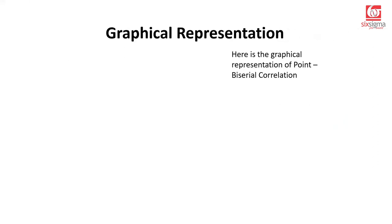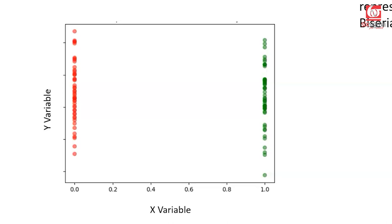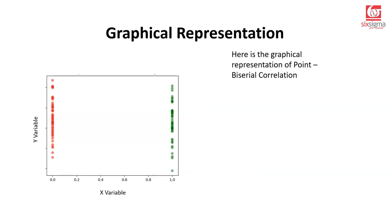Now let's look at the visual representation of a point bi-serial correlation. It looks very different from a typical Pearson's correlation view because in that case you have both variables which are continuous, and even in Spearman's rank correlation the variables have a monotonic relationship. But in bi-serial correlation, one variable only attains one of two values — either 0 or 1 — and the other variable is continuous. We've color-coded the plot: the red points represent the spread of the numerical variable corresponding to zeros, and the green points represent the spread of the continuous variable corresponding to the dichotomous category as 1.